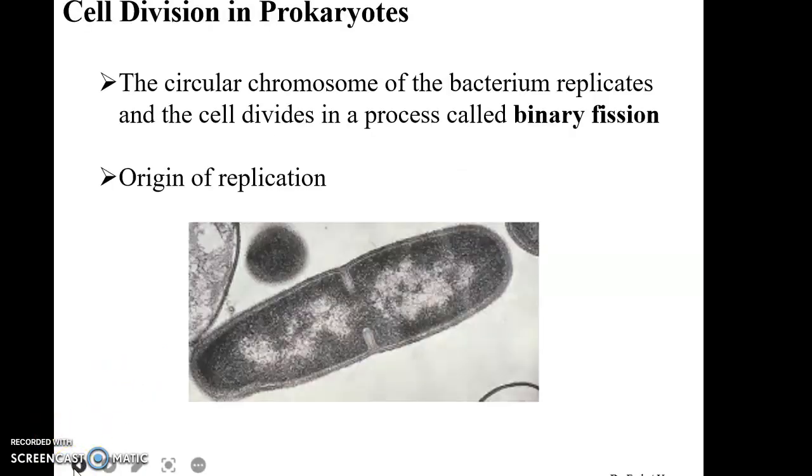When prokaryotic cells reproduce, the circular chromosome within the bacterium replicates and the cell divides through a process called binary fission.